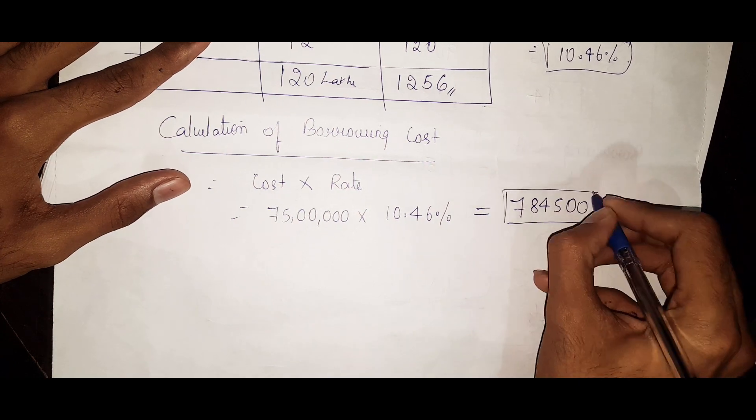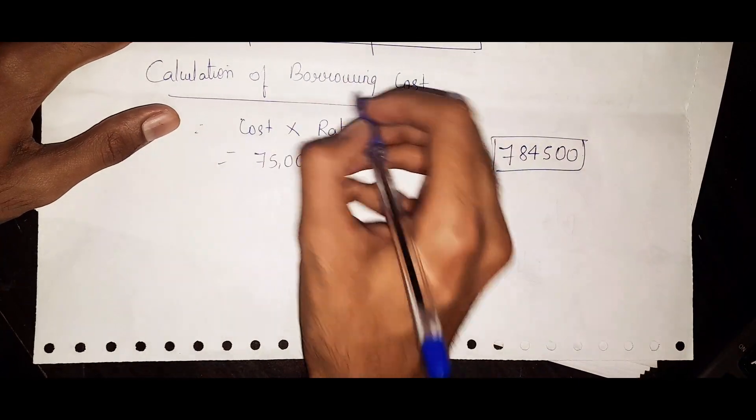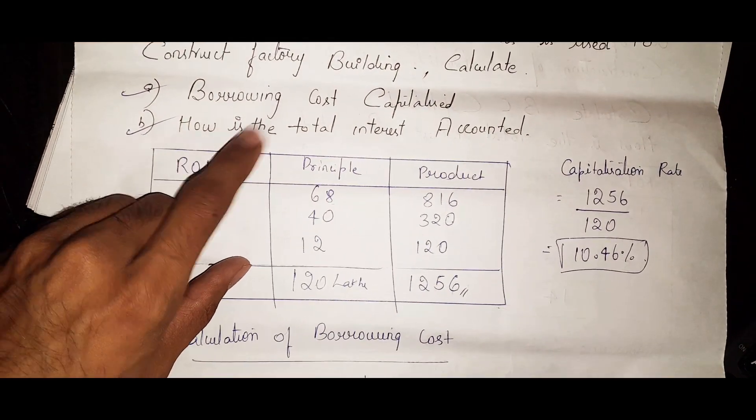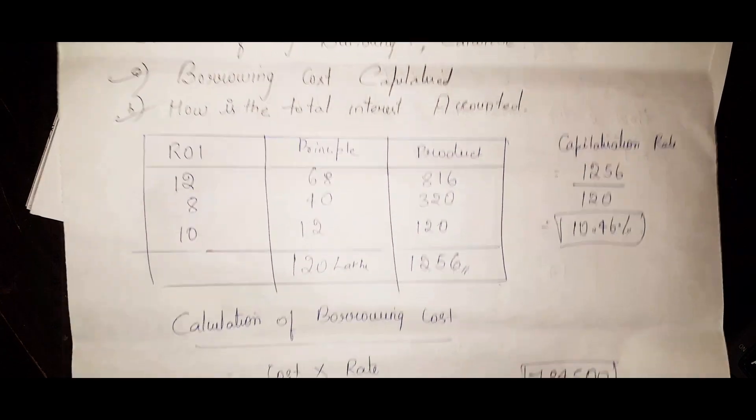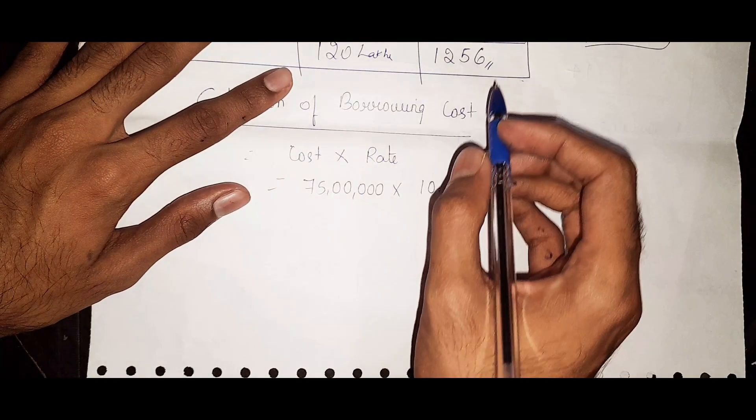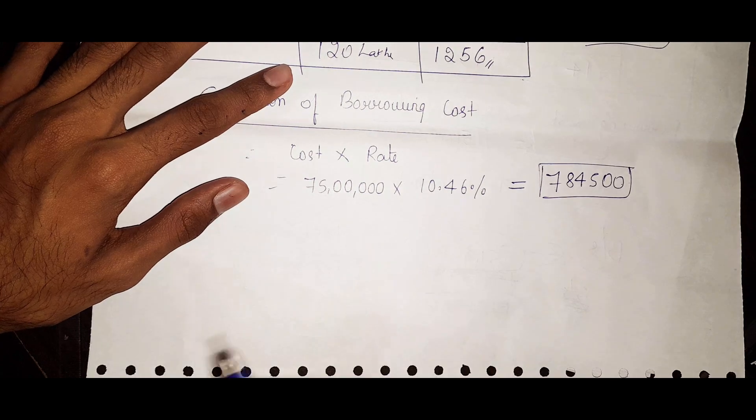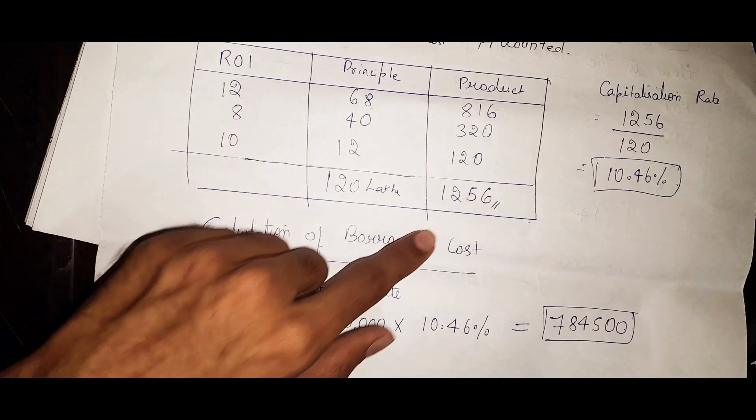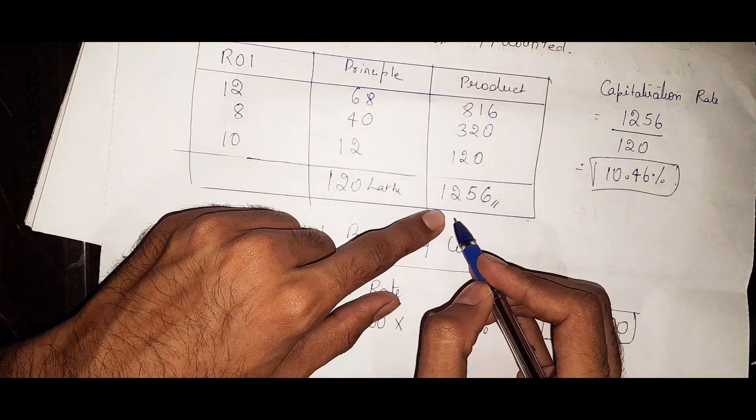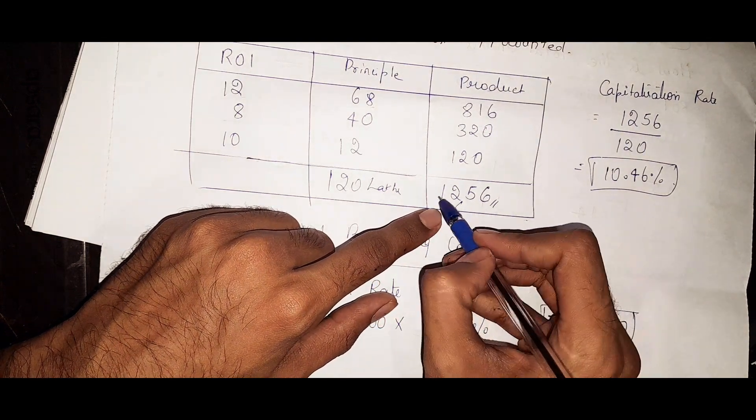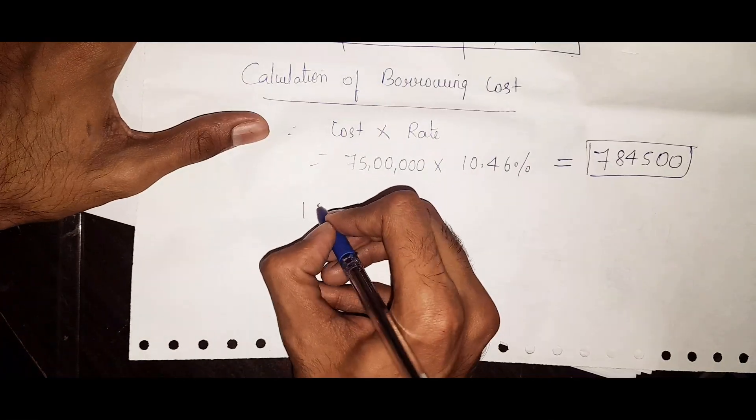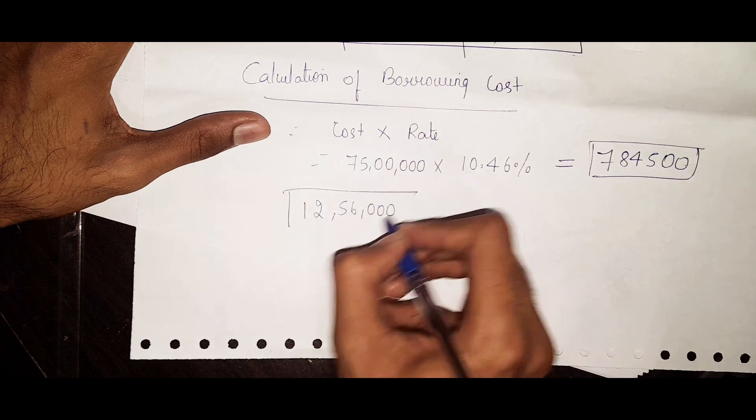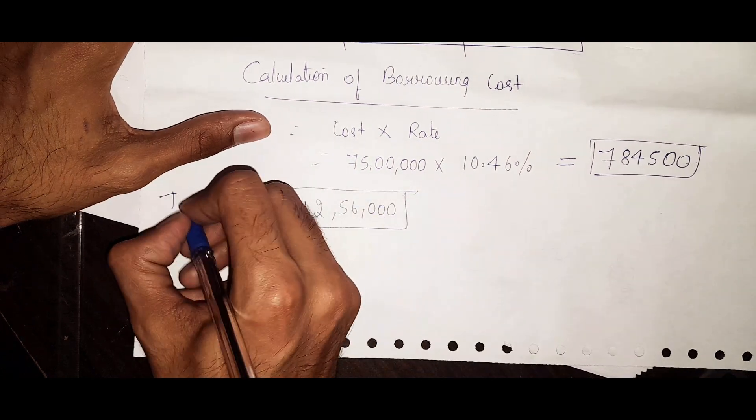This is borrowing cost, but in this problem they have asked one more question: how is the total interest accounted? If you observe this table, the total interest is 12 lakh 56 thousand. It is total interest.